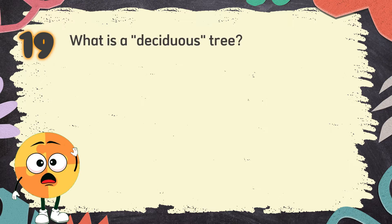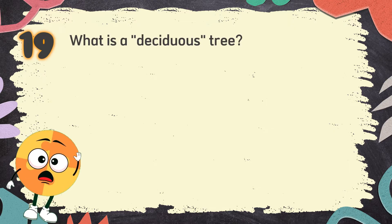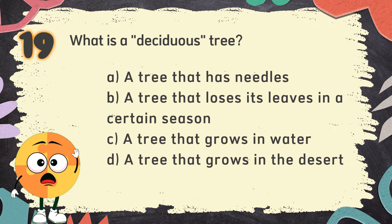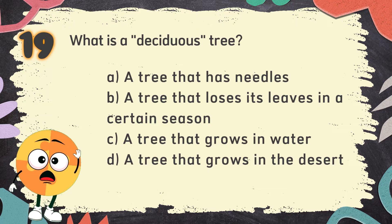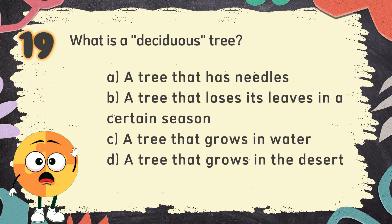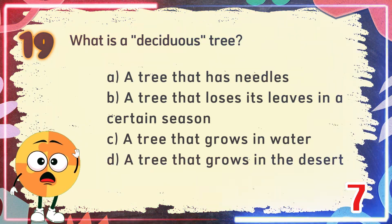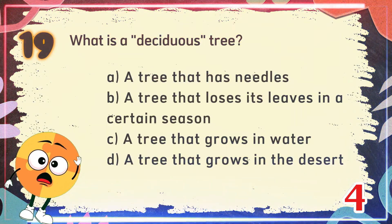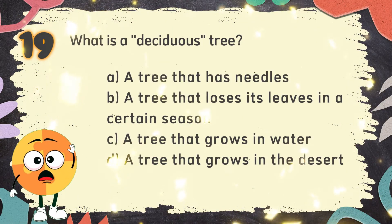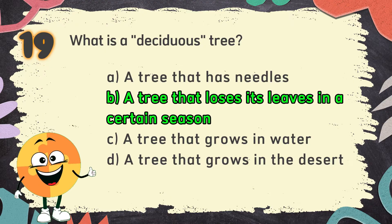Number 19: What is a deciduous tree? The choices are: A. A tree that has needles, B. A tree that loses its leaves in a certain season, C. A tree that grows in water, D. A tree that grows in the desert. The correct answer is B. A tree that loses its leaves in a certain season.